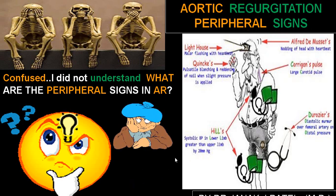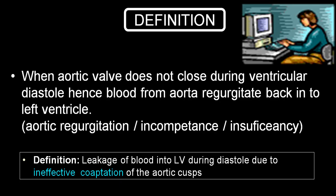By definition, aortic regurgitation occurs when the aortic valve does not close during the ventricular diastolic period, so blood regurgitates from the aorta into the ventricle. It was also previously labelled as aortic incompetence or aortic insufficiency, but now the terminology is aortic regurgitation — a regurgitation of blood from the aorta into the LV during the left ventricular diastolic period because of incomplete closure of the aortic valve.